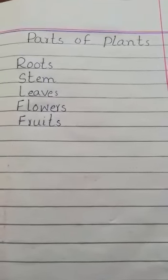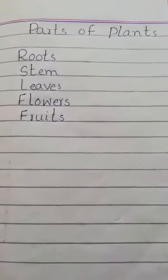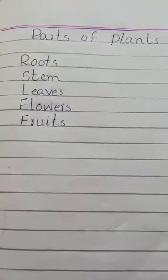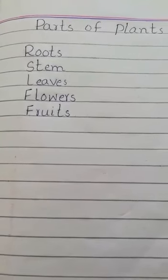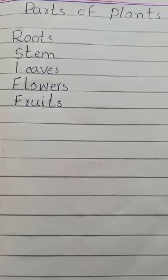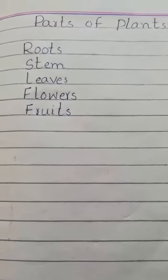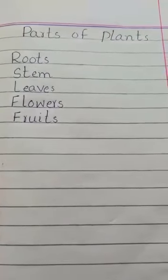Firstly we have to know about plants — what are plants? A living organism that grows in earth, in water, usually has stem, leaves, roots, flowers and seeds. Plants are made for food too, and food helps us to live and grow. There are some basic needs of plants like soil, water and sunlight.